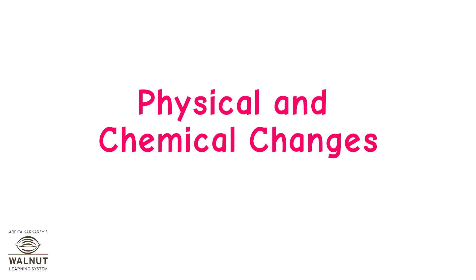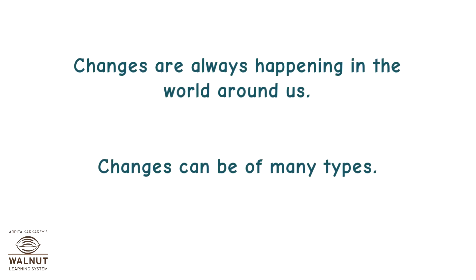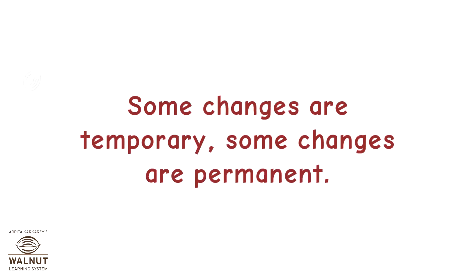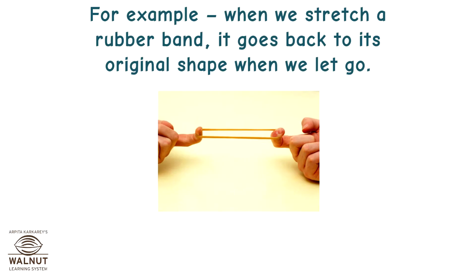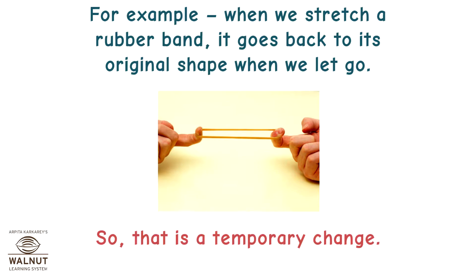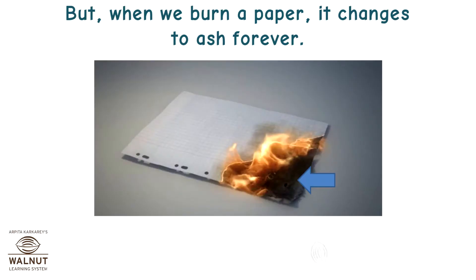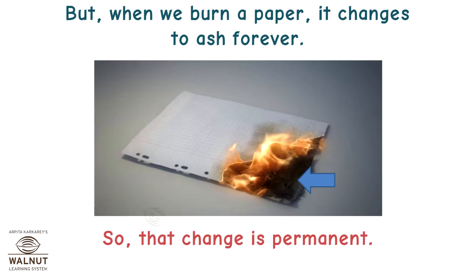Physical and chemical changes. Changes are always happening in the world around us, and they can be of many types. Some changes are temporary — when we stretch a rubber band, it goes back to its original shape, so that is a temporary change. But when we burn paper, it changes to ash forever. So that change is permanent.